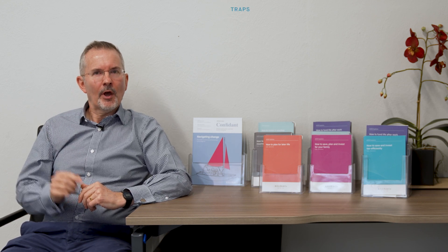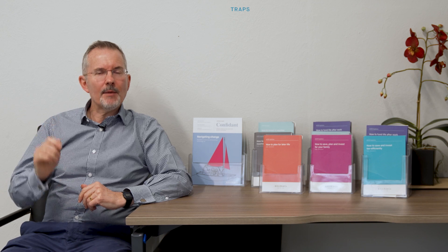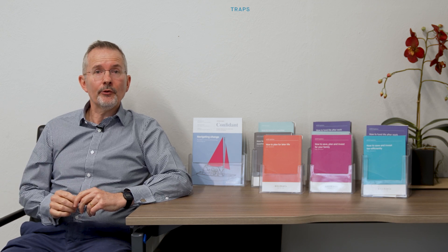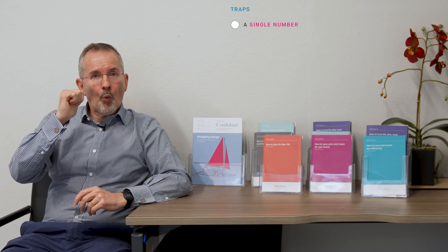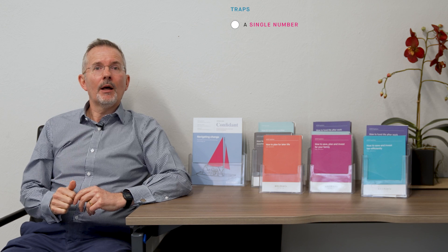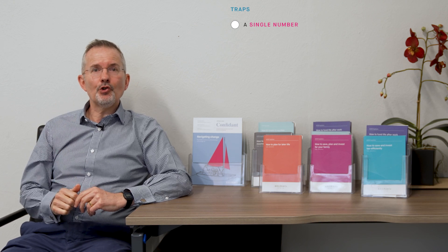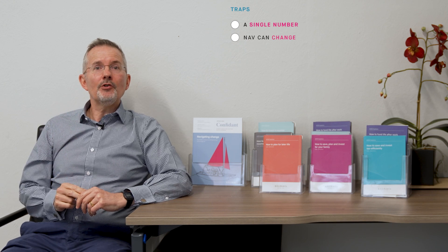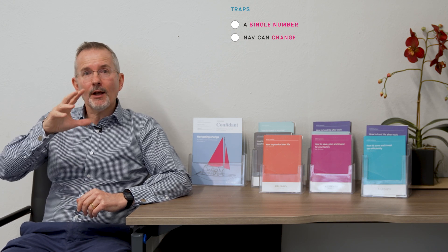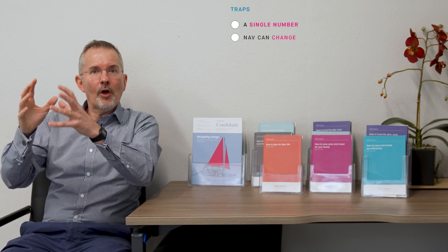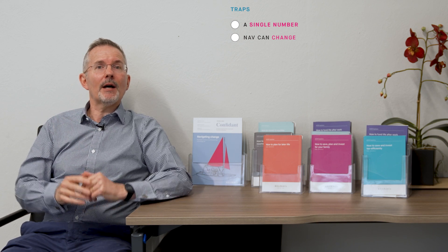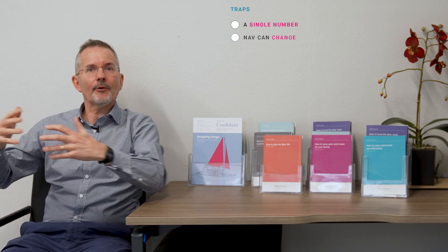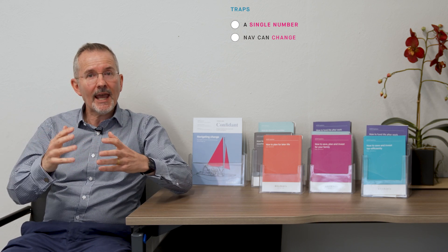Let's look at some of the traps — some of which apply to any ratio. First, relying on one number to get a snapshot on whether you should buy a company can be a bit dangerous. Net asset value can change in the short term and fluctuate. Although balance sheets don't move around as much as profit and loss accounts and cash flows, they can still move.